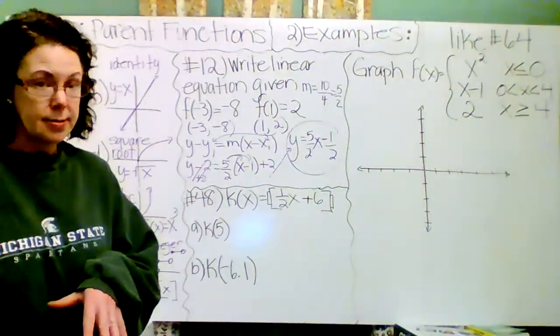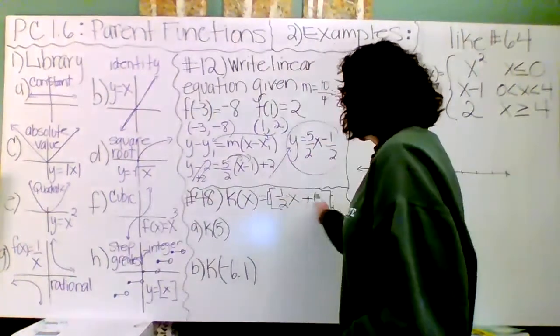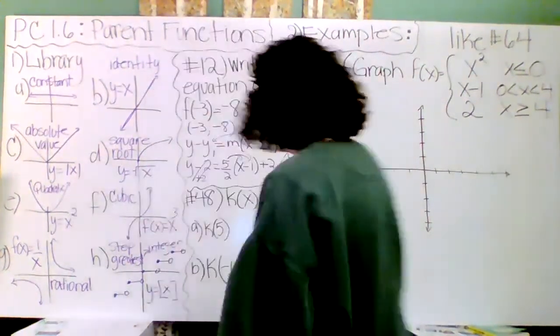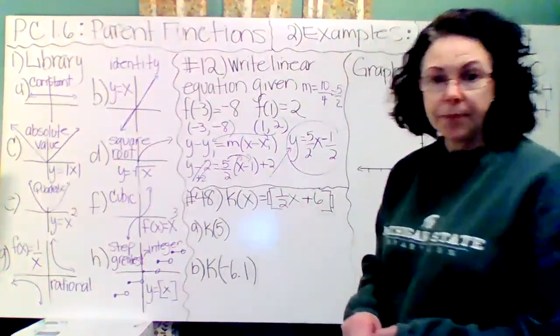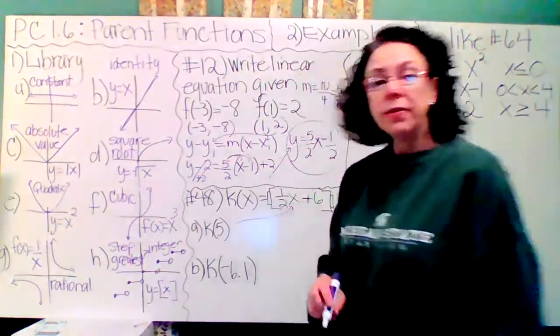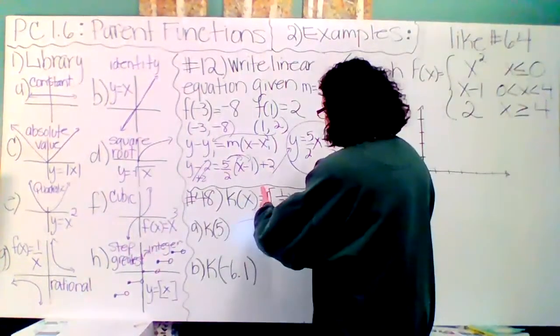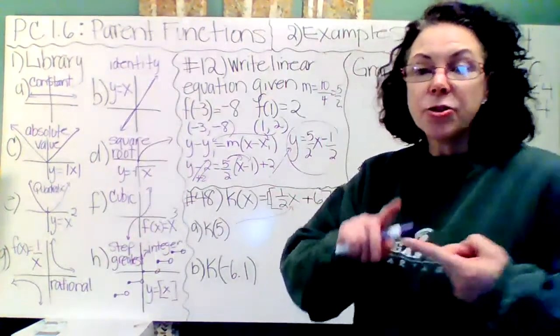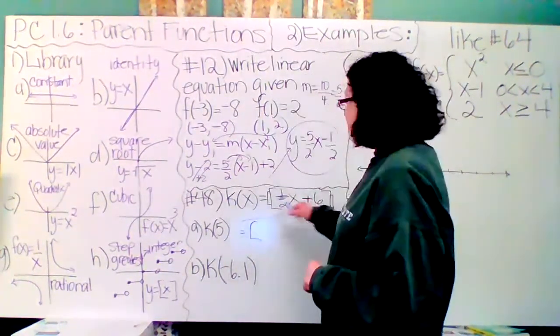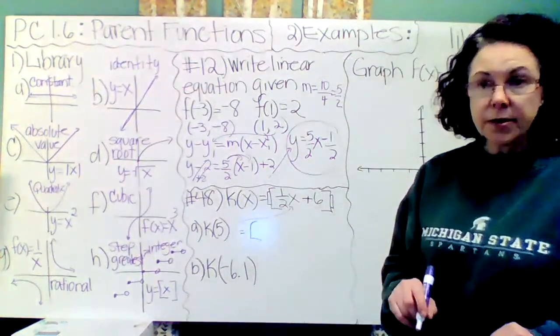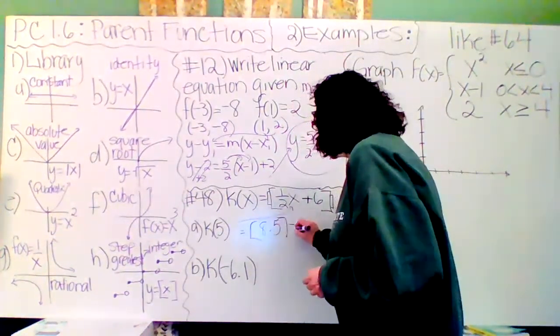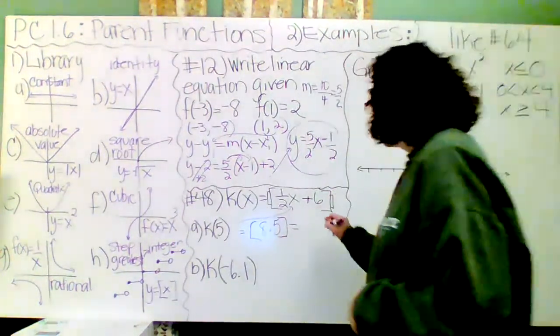Let's look at the step function. It is shown as two brackets. This is the greatest step function. We put the 5 in first and do the math on the inside. The last thing we do is give the greatest integer less than or equal to our value inside. This would give us five times one half is five halves, so that's 2.5 plus 6, so 8.5. The greatest integer less than or equal to 8.5 is 8.